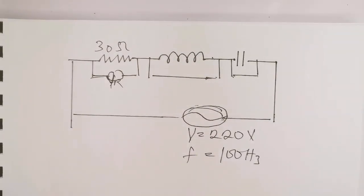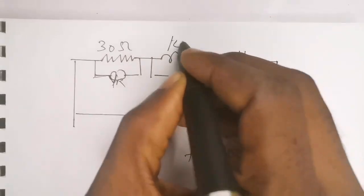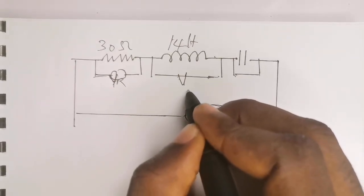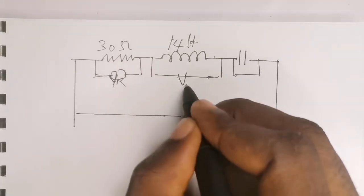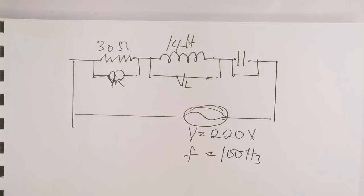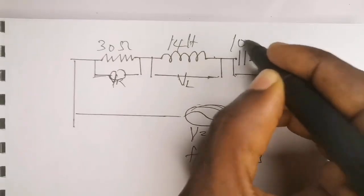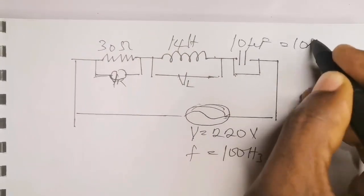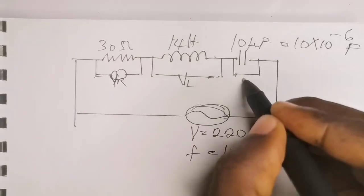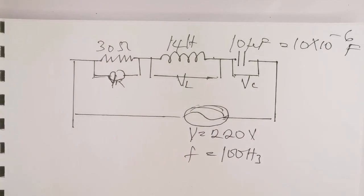Next we have the inductor, which has an inductance of 14 Henry. The voltage across the inductor is simply VL. Finally, we have the capacitor of 10 microfarad, which is equivalent to 10 × 10⁻⁶ farads. The voltage across the capacitor is simply VC. This is what the circuit diagram looks like.